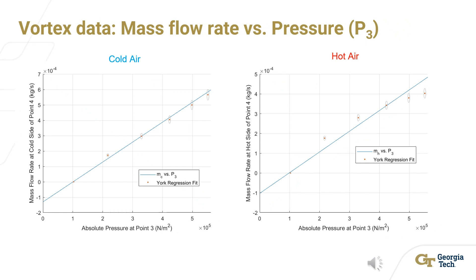These are the mass flow rates through the vortex tube. The cold air moves at a linear rate through the range of P3. The hot air is nonlinear and has a lower overall mass flow rate. This indicates that the hot air could be accumulating somewhere else in the system instead of flowing through the vortex tube.